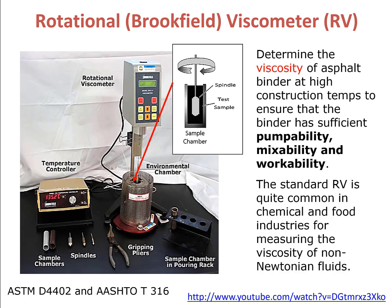This test consists of a rotational viscometer, a temperature controller, and an environmental chamber. This test is performed only on un-aged binders, so the samples do not need to go through either the short-term aging or the long-term aging process. The sample is first placed into the sample chamber, and then both the sample and the sample chamber are placed into the environmental chamber. The spindle is then placed in the asphalt binder and rotates at a specified speed, and the viscosity is determined by the amount of torque required to rotate the spindle at this specified speed.